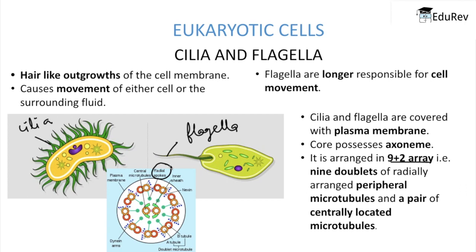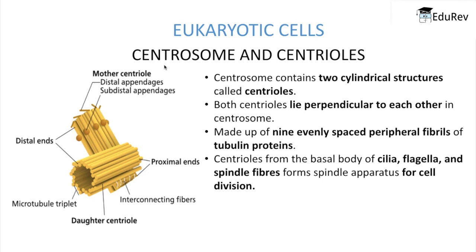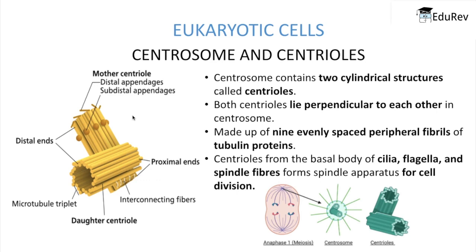Centrosomes and centrioles are unique features of the animal cell. Centrosomes contain two cylindrical structures known as centrioles, which lie perpendicular to each other inside the centrosome. Centrioles are made up of 9 evenly spaced peripheral fibrils present in triplet form, located on the peripheral area and made up of tubulin proteins.